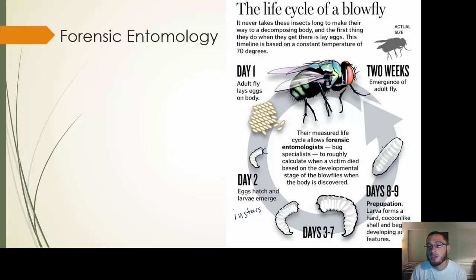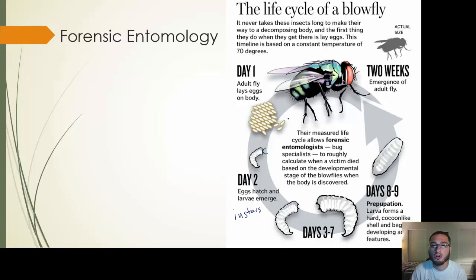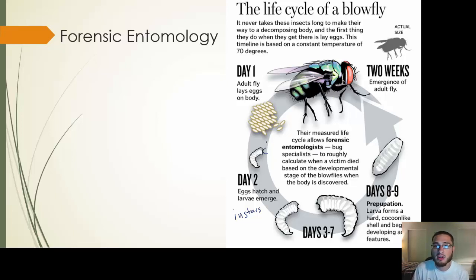Eventually you get to the pupa stage. The later instars go down into the soil and pupate, making a little cocoon. After they pupate, they turn into a fly and leave to find another corpse to lay eggs, starting the process all over again. By knowing this life cycle — eggs on day one, new instars on day two, instars growing and then pupating around day eight or nine, and adult flies emerging about two weeks later — that can tell us when this person died and how long the corpse has been there. Variables like location and temperature affect the blowfly life cycle, and a forensic entomologist will account for those.